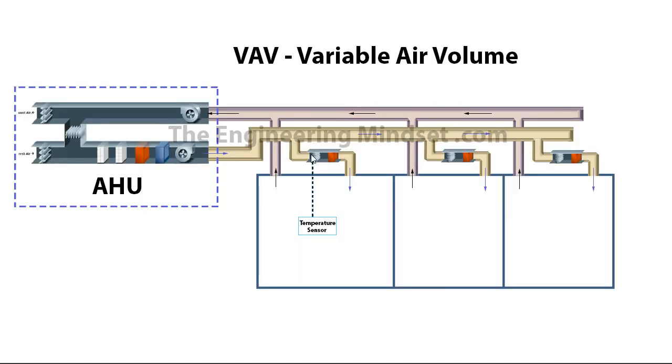Now if you imagine these VAV boxes which are connected to the system here, as they can all vary the amount of air which is coming and filling into the space before being returned to the AHU, as they vary that amount of air, then these dampers will start to close.